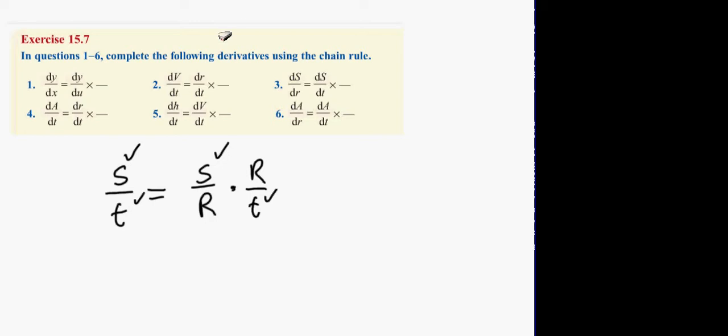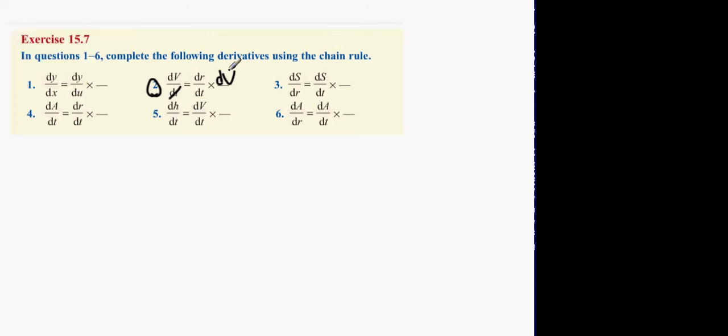The chain rule obeys the same principle. So for example, in question 2, the dV/dT equals dV/dR multiplied by, but the T is on the bottom. What happens is the V is here, the V is here, and then that's the T on the bottom, the T here, and this is a dR, so dR is there.